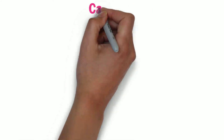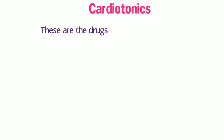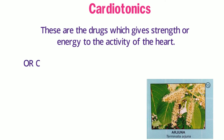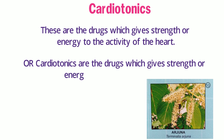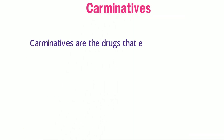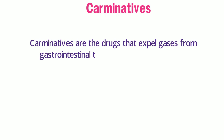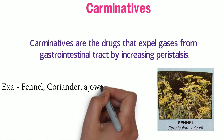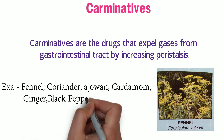Cardotonics are the drugs which give strength or energy to the activity of the cardiac muscles. Examples include digitalis and arjuna. Carminatives are the drugs that expel gases from the gastrointestinal tract by increasing peristalsis. Examples include fennel, coriander, cardamom, ginger, black pepper, asafoetida, cinnamon, nutmeg, and clove.